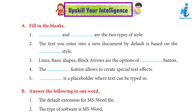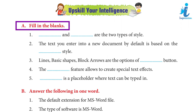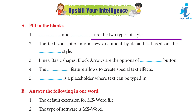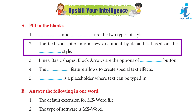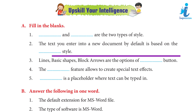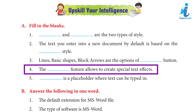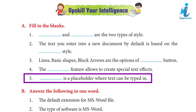Upskill your intelligence. A. Fill in the blanks. 1. Character and paragraph are the two ways to style. 2. The text you enter into a new document by default is based on the text style; answer: text. 3. Lines, basic shapes, and block arrows are options of the Insert button. 4. The WordArt feature allows you to create special text effects. 5. A text box is a placeholder where text can be typed in.